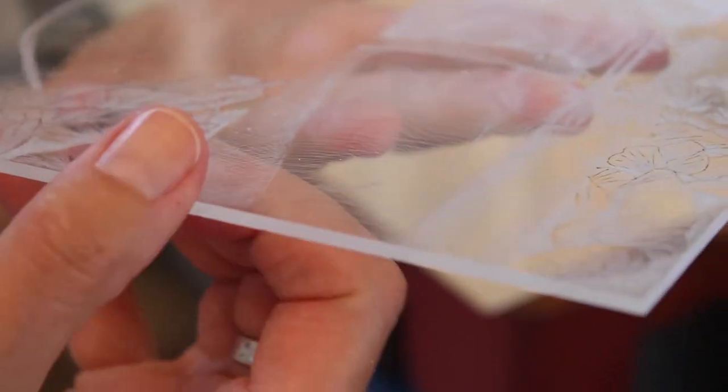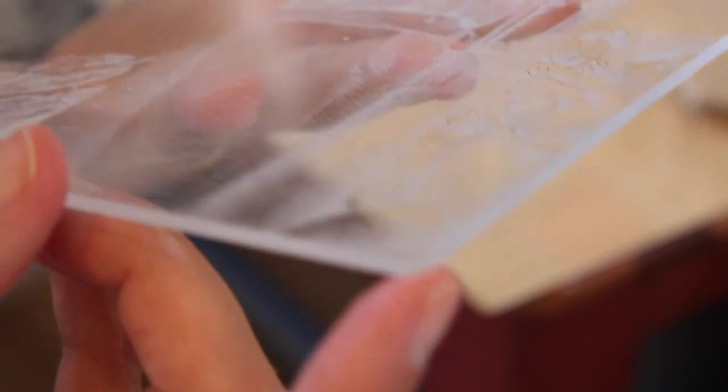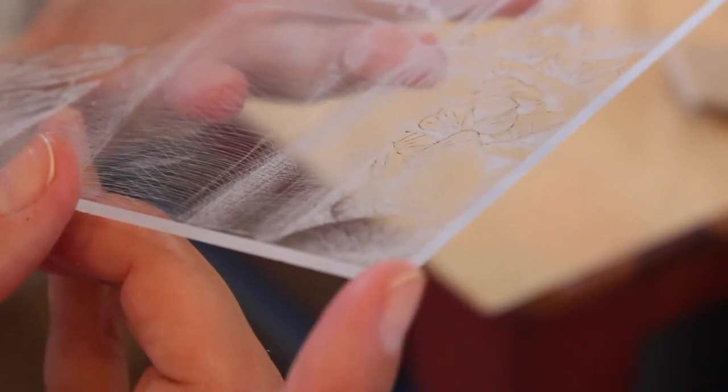The unbeveled edges of a plexiglass plate can be quite sharp. These will easily cut through your printmaking paper and the blankets if you are printing on a press. If you're working on a borrowed press you absolutely want to bevel your plates.